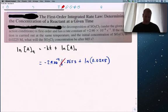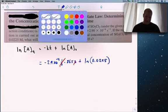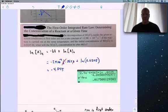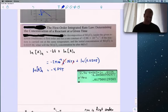Minus 2.9 times 10 to the minus four per second times 865 seconds, plus natural log of 0.0225 molar. Notice the seconds cancel. We plug this into our calculator.